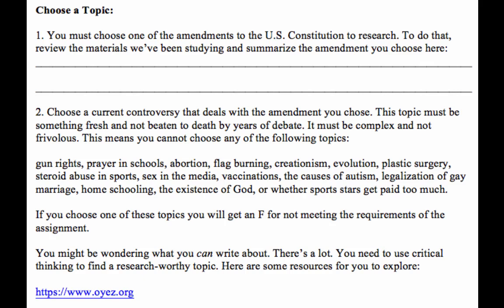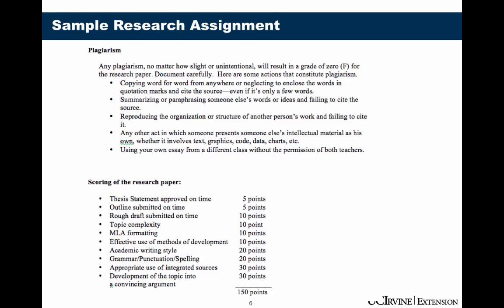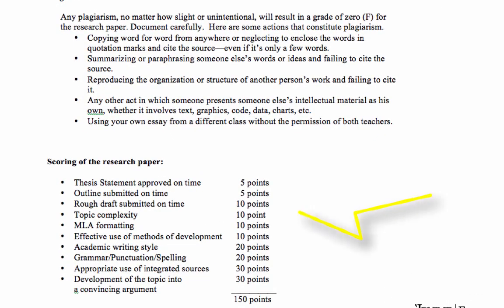Notice down here the teacher tells you there are still many other topics you can choose from, and even gives students some resources to help them think. Research assignments are often several pages long because teachers want to give you all the information about the assignment. This teacher also reminds students about rules of plagiarism — you'll always want to review that so you don't make any mistakes. The teacher usually gives you information about grading: this paper is worth 150 points, which is a portion of the course grade. Students should pay attention to each part so they don't lose points by forgetting something.